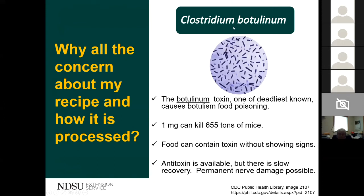One milligram of botulinum toxin can kill 655 tons of mice — not 655 mice, but 655 tons. Foods can contain the toxin without showing signs, so you can't look at a product and detect it visually. There is an antitoxin available, but it results in a slow recovery and sometimes permanent nerve damage. The toxin kills by suffocating — it paralyzes the diaphragm so the lungs don't work correctly.